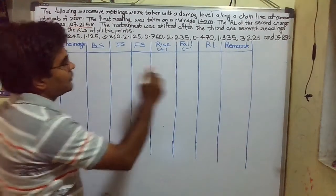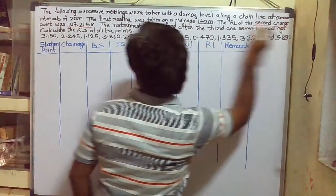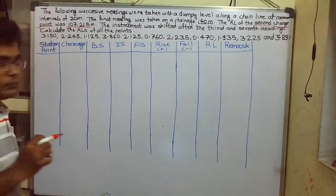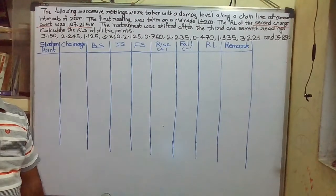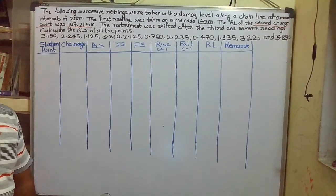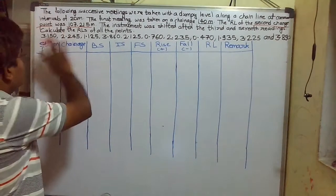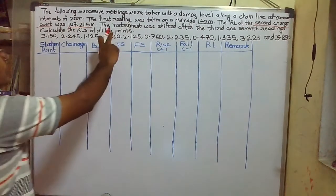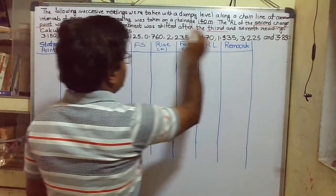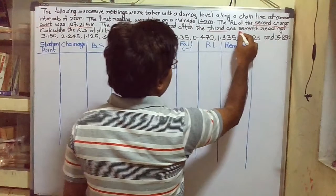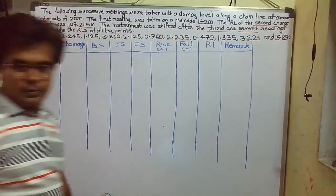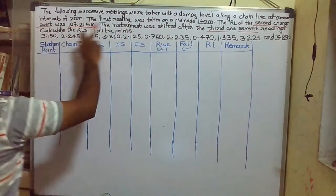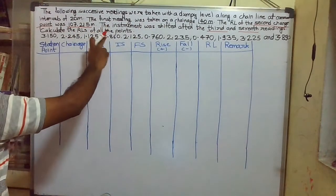There is a small difference from the last numerical. In the last numerical, the RL of the first point — that is the benchmark — was given. Here, the RL of the second change point is given, that is 107.215 meters. The instrument was shifted after the third and seventh readings. We have to calculate the RL of all the points.